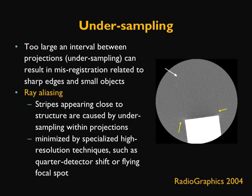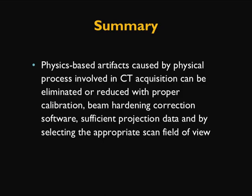Under the same category of under-sampling, there is also ray aliasing. Stripes appearing close to the structure are caused by under-sampling within the projection, as shown by the yellow arrows. This is minimized by specialized high spatial resolution techniques such as quarter detector shift or flying focal spot. In summary, physics-based artifacts are caused by physical processes involved in CT acquisition and can largely be eliminated or reduced with proper calibration, beam hardening correction software, sufficient projection data, and by selecting the appropriate scan field of view.